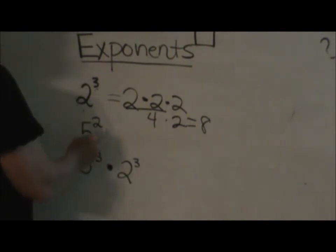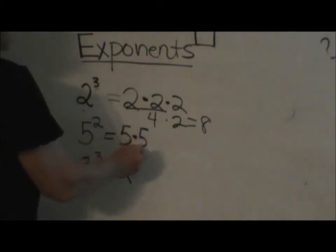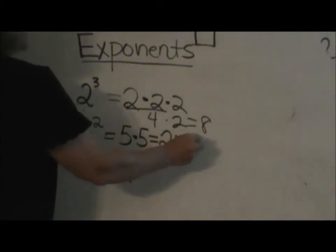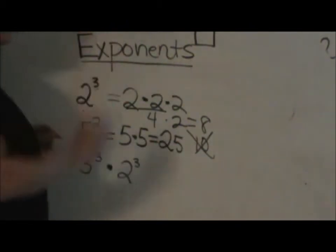So let's look at 5 squared or 5 to the second power. 5 squared is just 5 times 5 which is 25, not 10. So 10 is not the correct answer but it is 25.